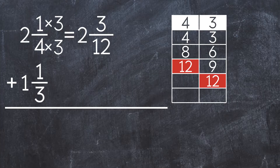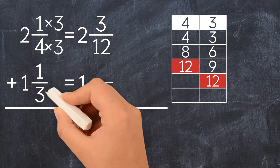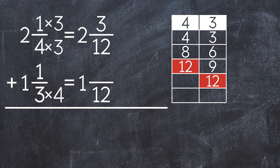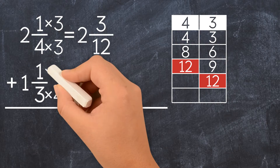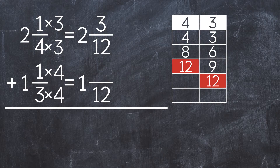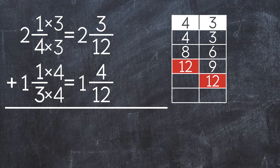Let's rename the second mixed number. To get 12 in the denominator, we have to multiply 3 by a number. That number is 4. We also have to multiply the numerator by 4 to get 1 and 4 twelfths.